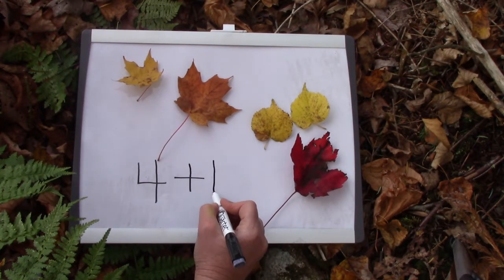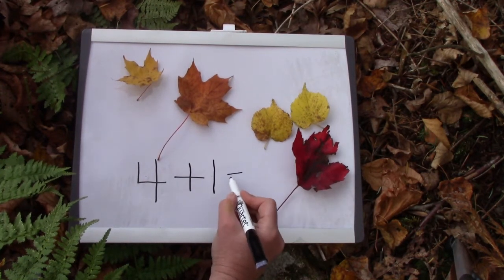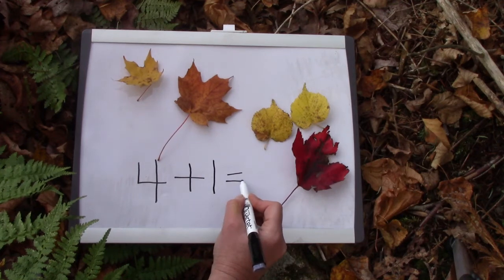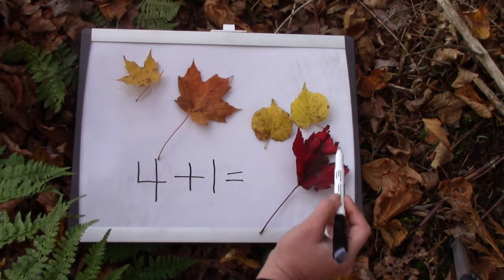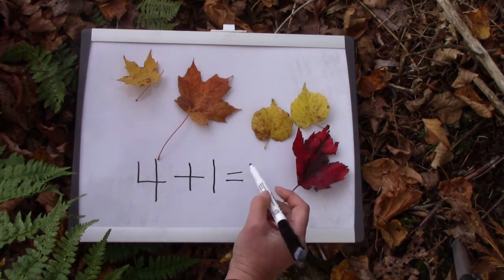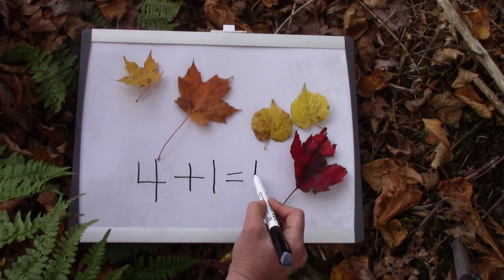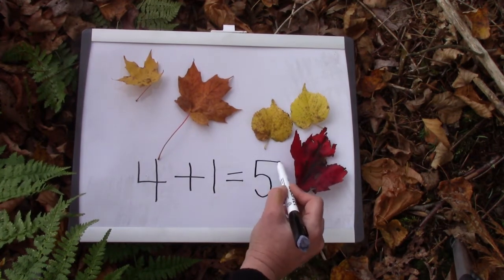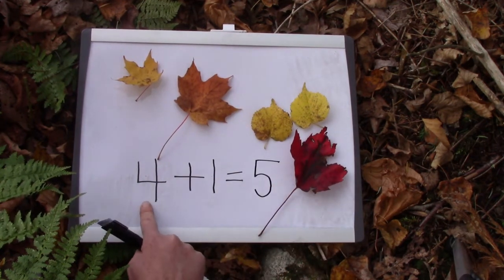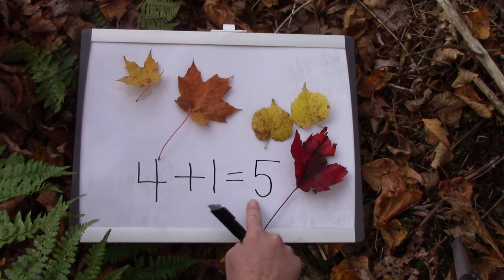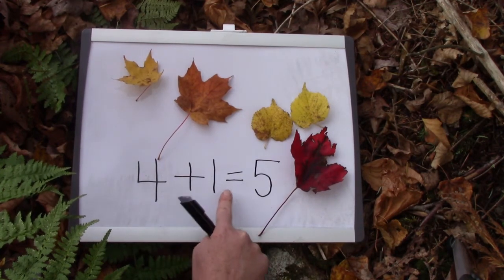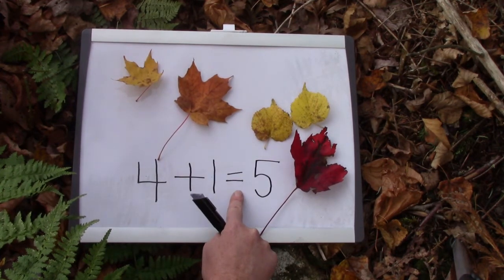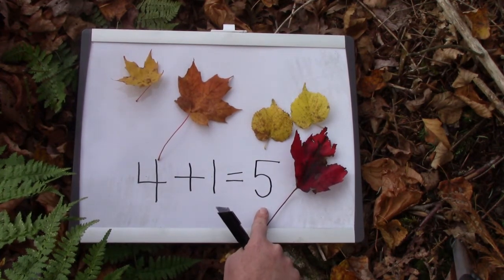Four plus one equals? Let's count — one, two, three, four, five. It equals five. This is our number sentence: four plus one equals five.